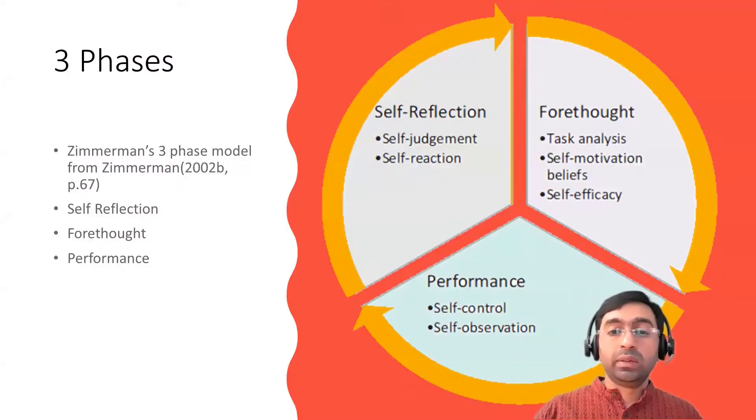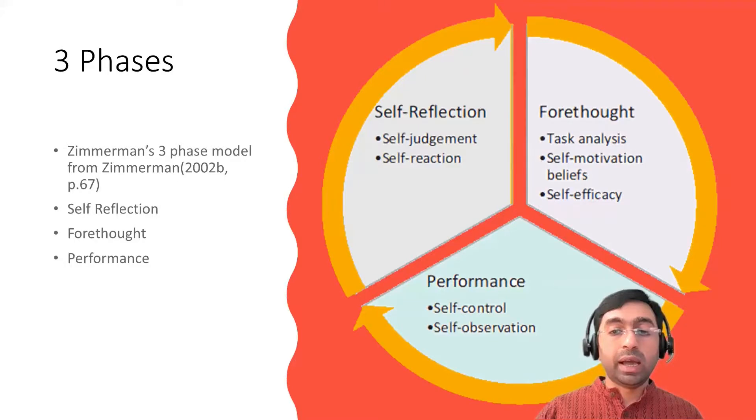As we saw in the previous module, there is Zimmerman's three-phase model, which includes self-reflection, forethought, and performance. Self-reflection is where you do self-judgment. The forethought part is where you do task analysis — scheduling, self-motivation, belief, and checking your efficacy. The performance phase is where you show control, observe your environment, and stay engaged.